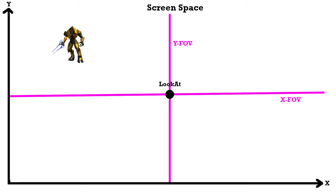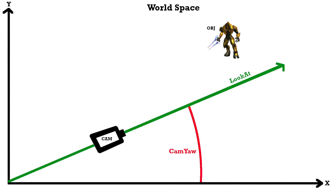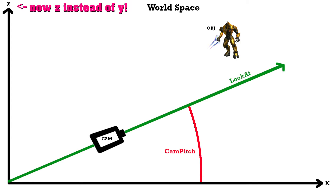Usually the X field of view angle is stored in memory and we can calculate the other one by dividing by the width of our screen and multiplying by the height. Next we have two more angles. One is called yaw — it's the angle between the X-axis and the vector, for instance our look-at vector. We can get its value with the atan2 function, taking the vector's X and Y values. The other one is called pitch. The pitch angle is the angle between the X-Y plane and the vector, and we can get this value by applying the atan2 function to the Z value of the vector.